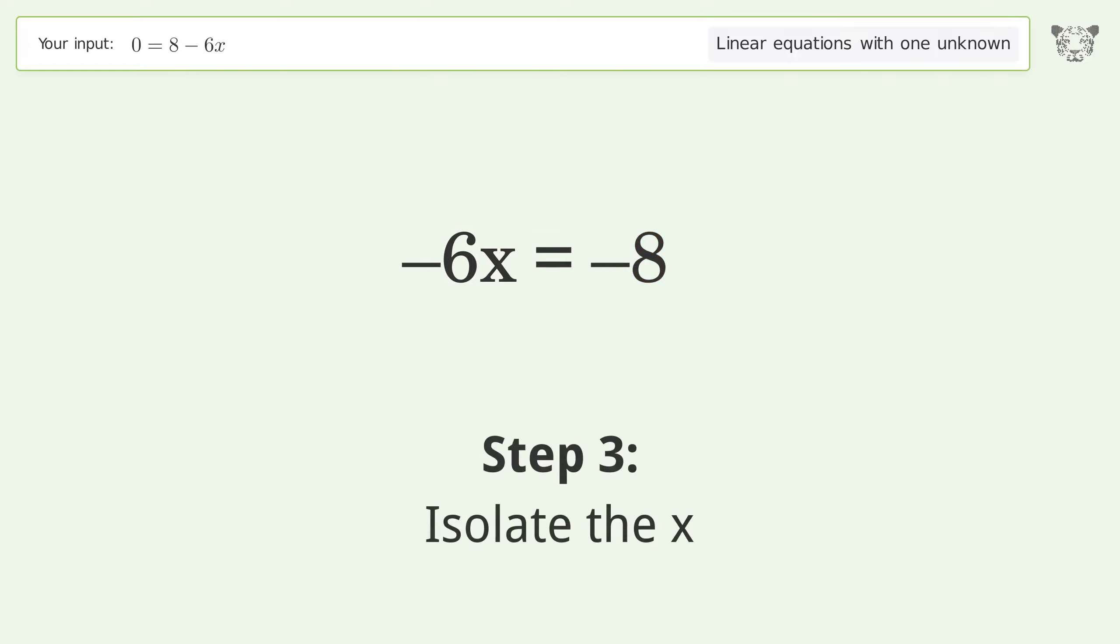Isolate the x. Divide both sides by negative 6. Cancel out the negatives.